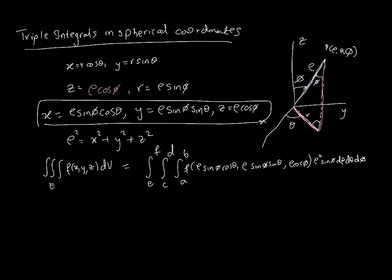An important thing to note: just like before we had r dr dθ in polar coordinates, here we have ρ² sinφ dρ dθ dφ. This is because r is replaced by ρ sinφ. That's our conversion. Now let's look at some examples.